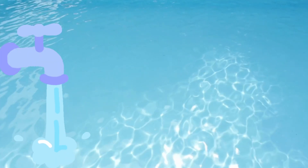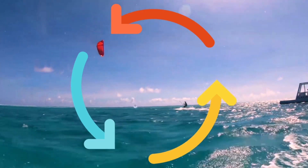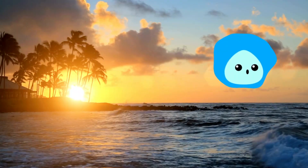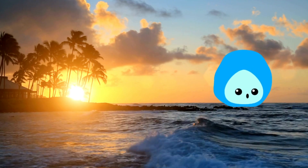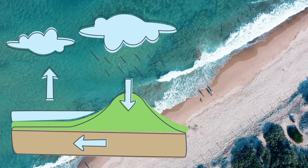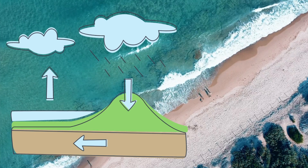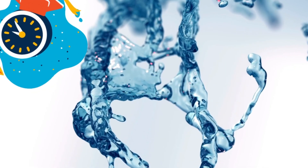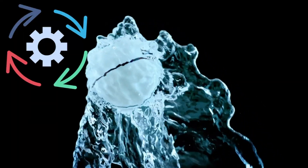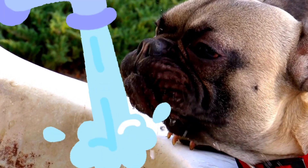Water is always moving. Rain that's fallen where you live may have been water in the ocean a couple of days before. Water can be in the atmosphere, on land, in the ocean, and even underground. It gets used over and over again through what is called the water cycle.